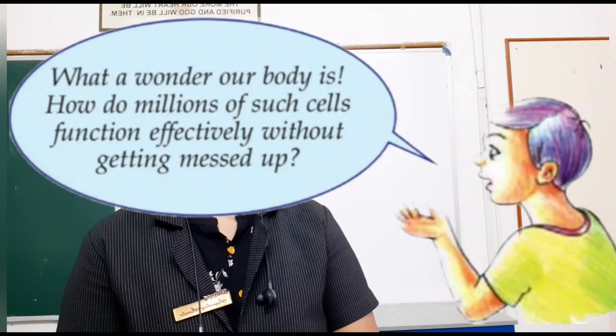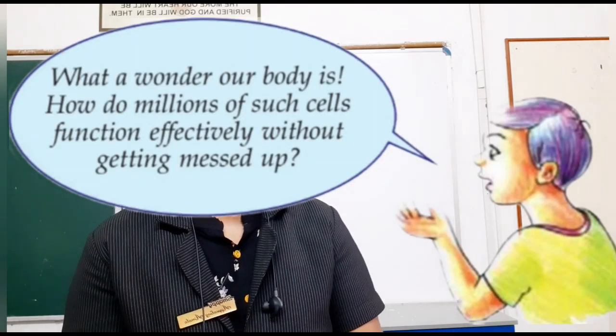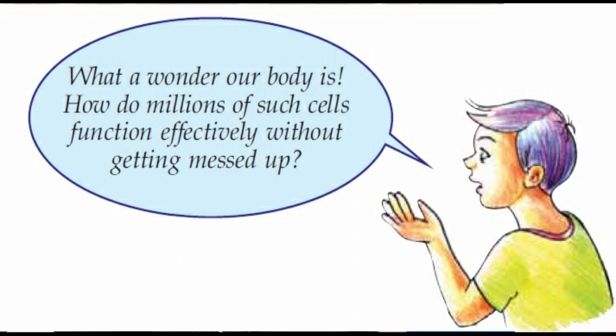Now, you look at this boy's doubt: what a wonder our body is! How do millions of such cells function effectively without getting messed up? This boy is thinking that there are millions of cells in our body, so how do these millions of cells function effectively to carry on our physiological activities? You know what our physiological activities are — digestion, respiration, excretion, blood circulation. These many things are happening every time in our body, and it is going effectively.